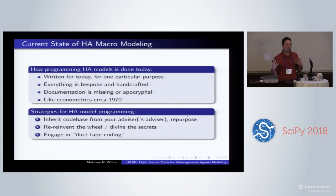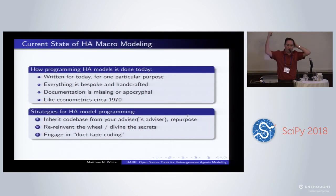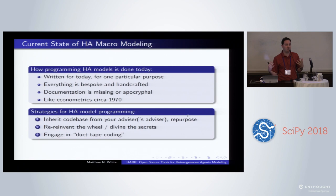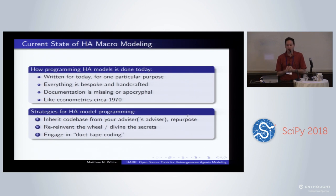Documentation either isn't there, has been deleted as it's been inherited through the years, or is just cryptic or apocryphal. Chris Carroll, the principal of this project, likes to compare this to econometrics in the late 60s to early 70s, where we said: oh, you want to run a regression? Great. Go write a matrix inversion algorithm and then get started. Well, right now — or up until recently — we've been telling graduate students and young PhDs: go write your own backwards induction loops and your own optimization routines, because you have to start from zero unless you know the right people.